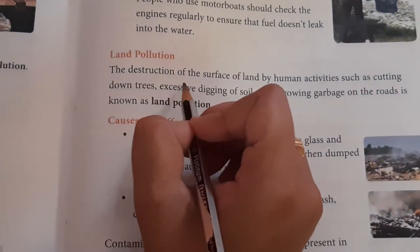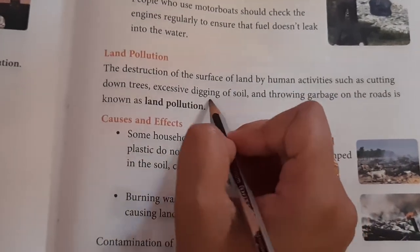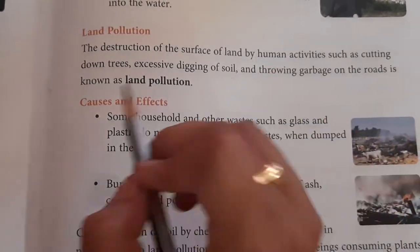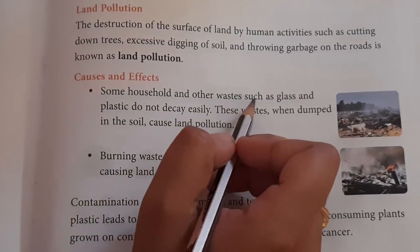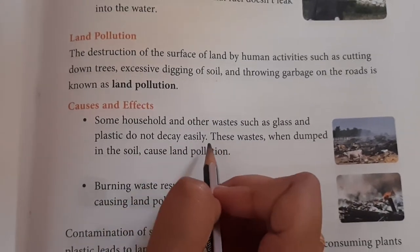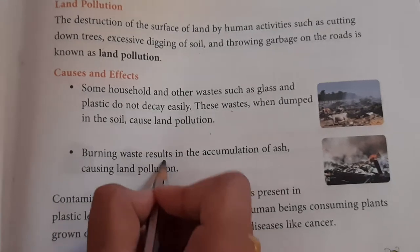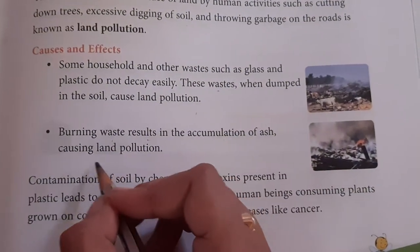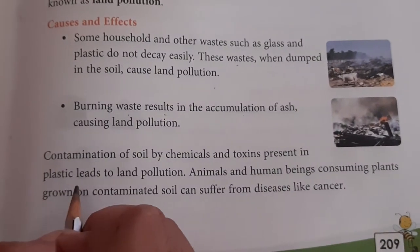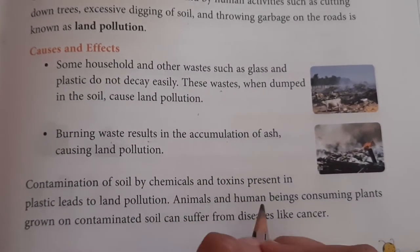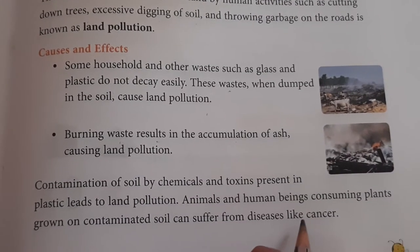Land pollution: the destruction of the surface of land by human activities such as cutting down trees, excessive digging of soil and throwing garbage on the road is known as land pollution. Causes and effects: some household waste such as glass and plastic do not decay easily. These wastes, when dumped in the soil, cause land pollution. Burning waste results in accumulation of ashes, causing land pollution. Contamination of soil by chemicals and toxins present in plastic also leads to land pollution. Animals and humans consuming plants grown on contaminated soil can develop diseases like cancer.